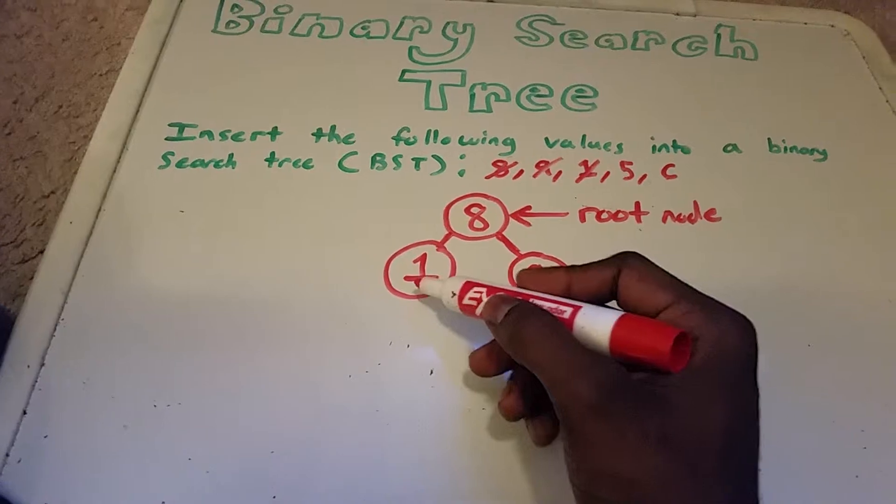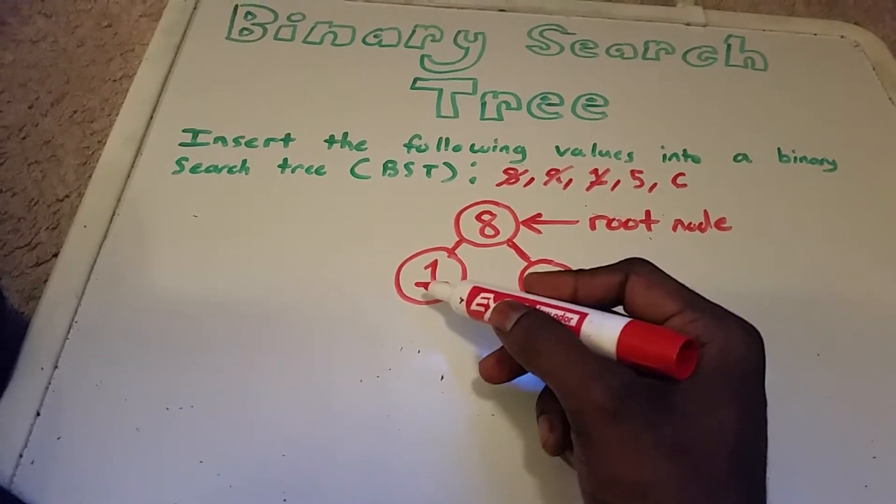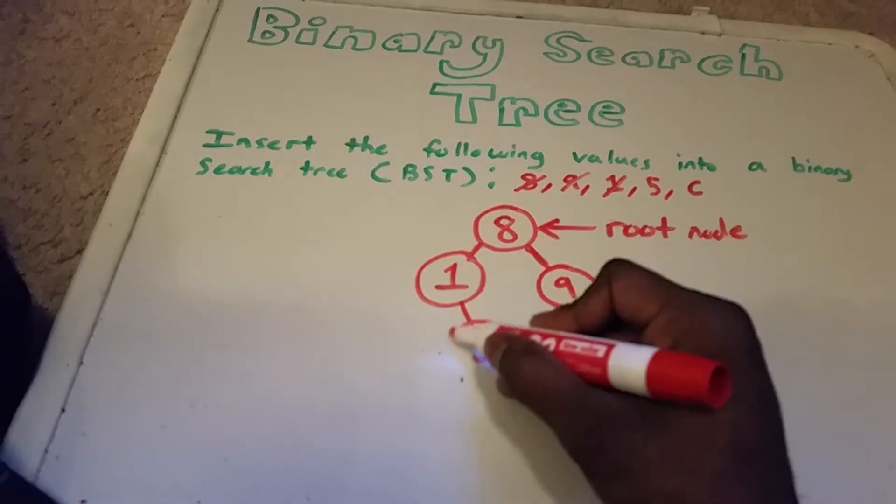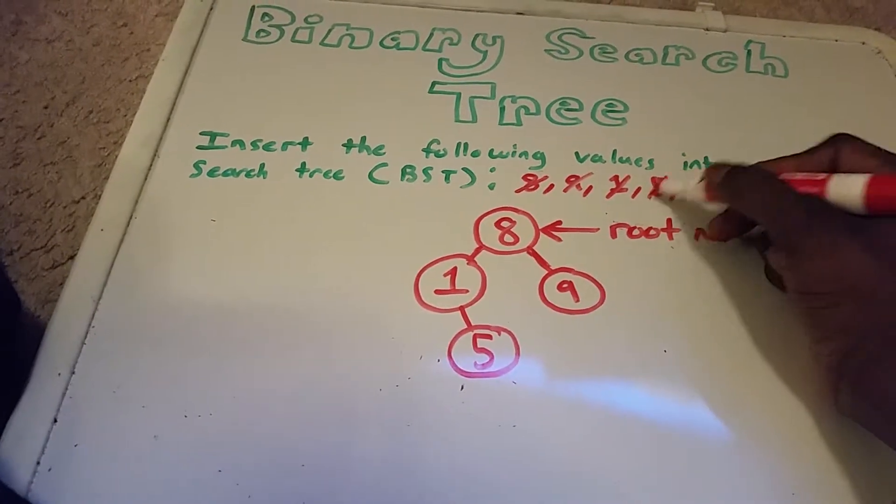So we check here. We go to the 1. Is 5 greater than 1? Yes. We put 5 here. Cross out the 5.